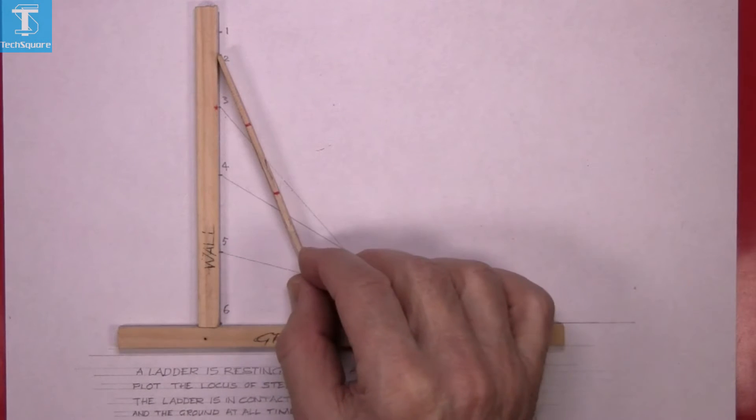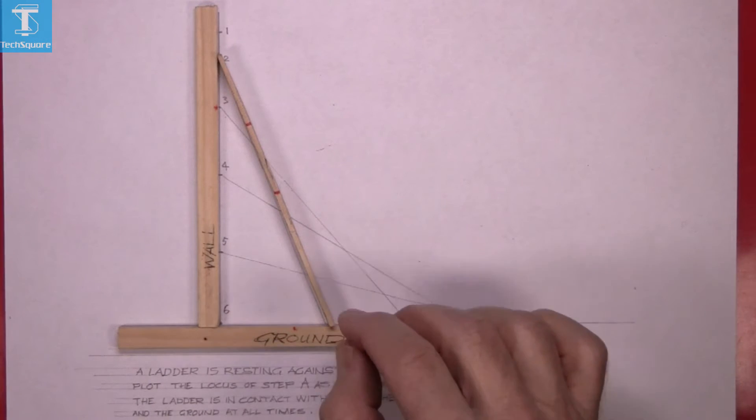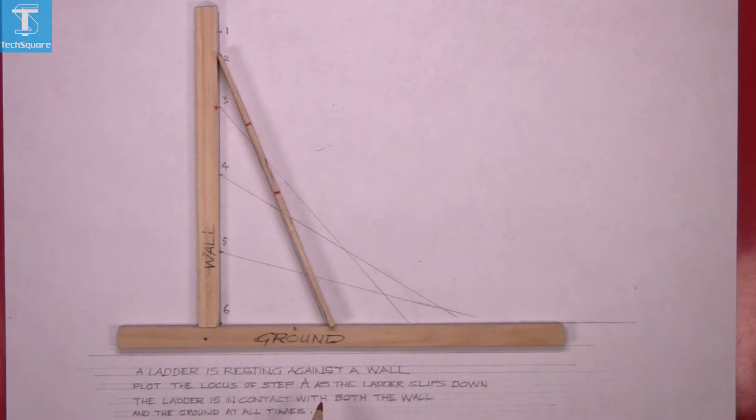The ladder rests against a wall like this. The question: a ladder is resting against a wall, trace the locus of step A as the ladder slips down. The ladder must be in contact with the wall and the ground at all times.